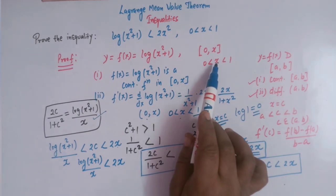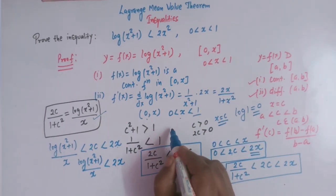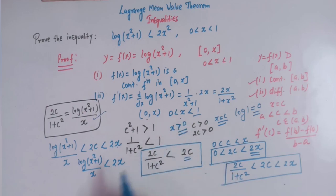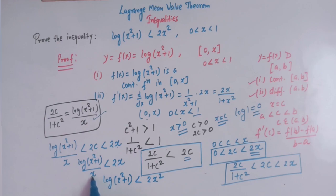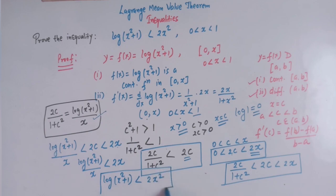Since x lies between 0 and 1, x is greater than 0. So we can multiply both sides by x to get log(x² + 1) < 2x², which is our desired inequality. This is how, by making use of Lagrange's Mean Value Theorem, we can arrive at this inequality.